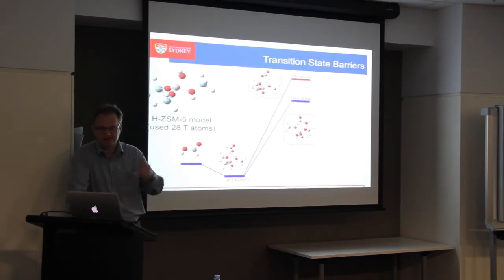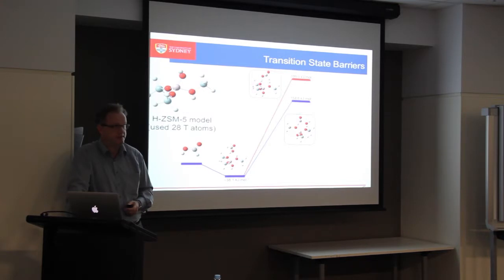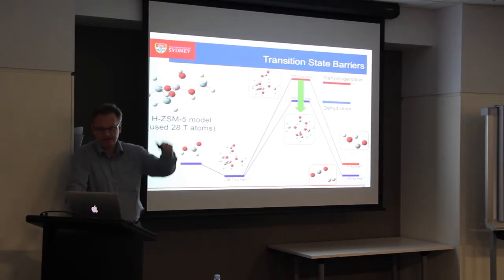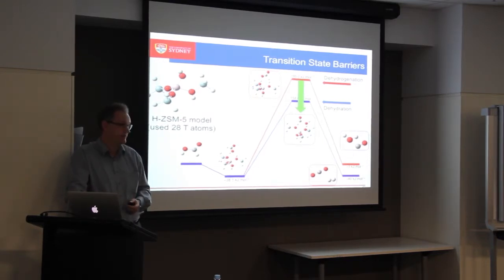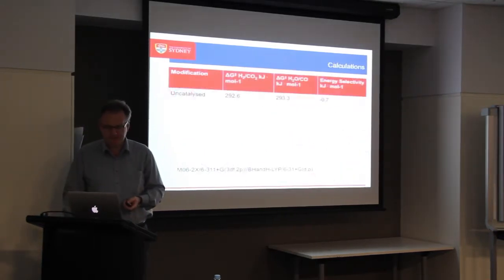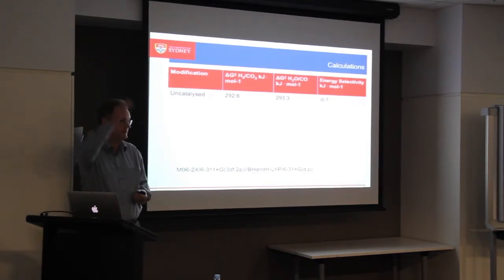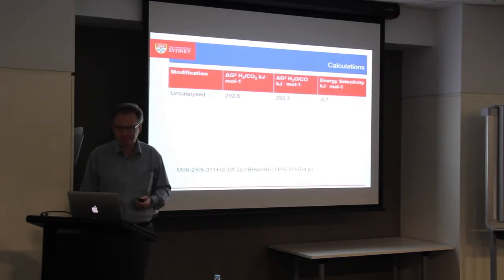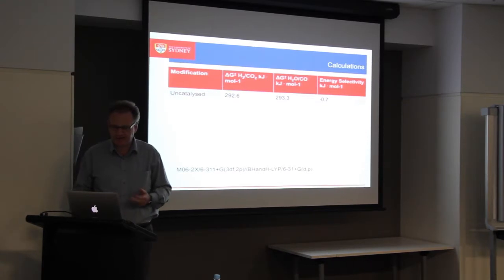As I go to the transition state, I get transition state barriers. What we can see is that for dehydrogenation, which is the one I want, the barrier is much higher than for dehydration, which is the one I don't want — which is a bit of a bummer. So I try to reduce that energy barrier with my catalyst. These calculations are for acidic ZSM-5. For the uncatalyzed reaction it's even worse — almost a hundred kilojoules more in terms of barrier — which is why formic acid is reasonably stable.